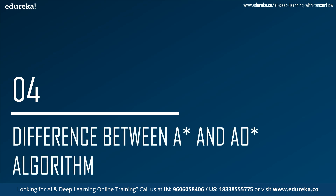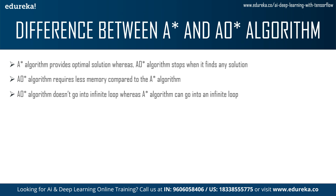The last part is the difference between A star and AO star algorithm. First, A star provides the optimal solution, whereas AO star stops as soon as it finds any solution — A star checks all nodes even after finding a solution, but AO star does not. Second, AO star requires less memory compared to A star, since A star processes every available option. Third, AO star does not go into infinite loops, whereas A star can.